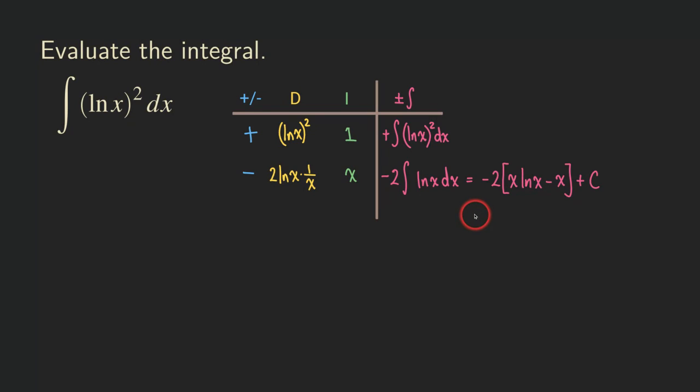And so from here, we can continue with the calculation. So we are going to get negative two x ln of x and then plus two x and then plus the constant of integration. Yeah, so that's that.